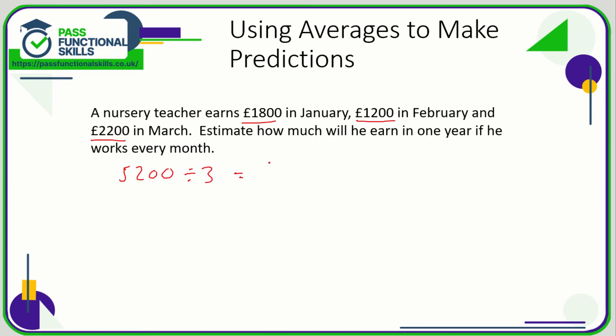So that means on average he earns £1733.33 per month. So in one year he's going to earn the average monthly salary times 12. This is just an estimate. £1733.33 times 12, that comes to a total of £20,800.